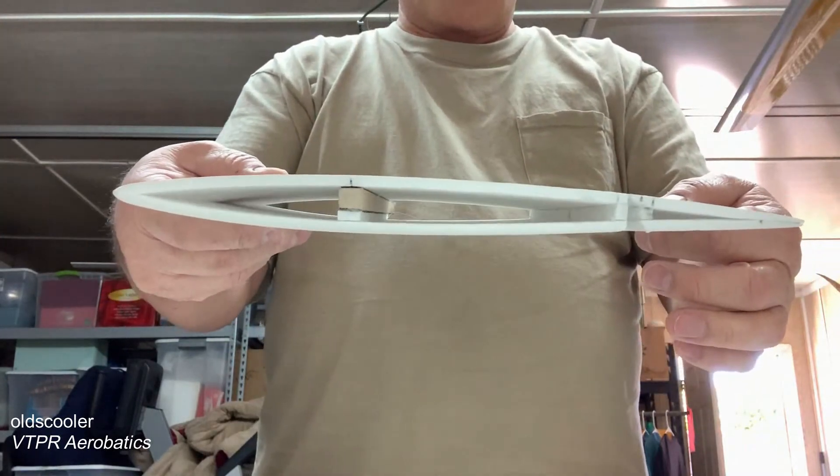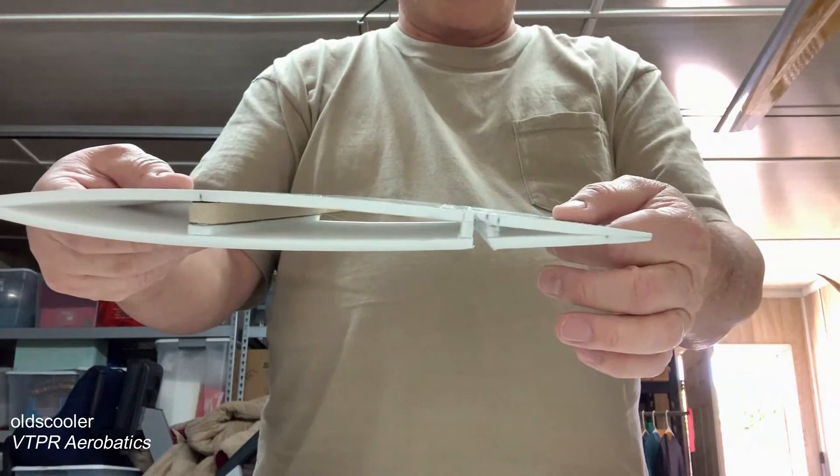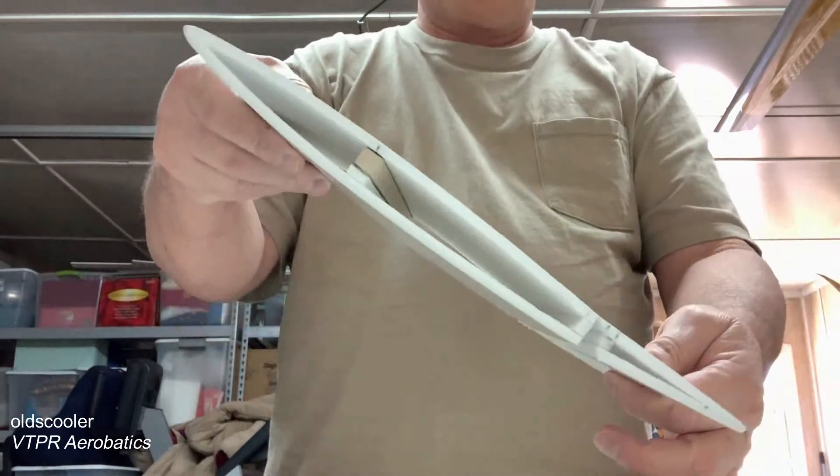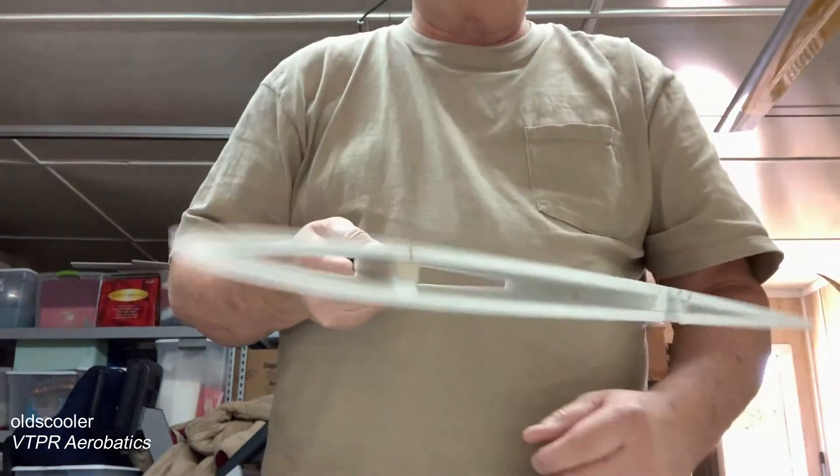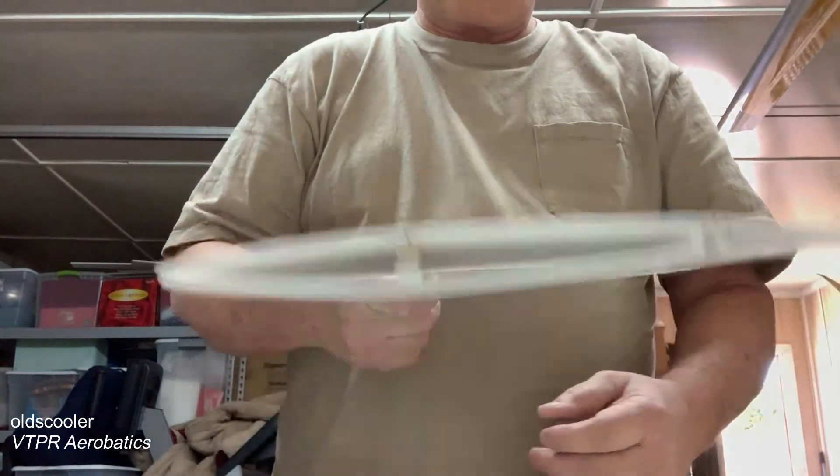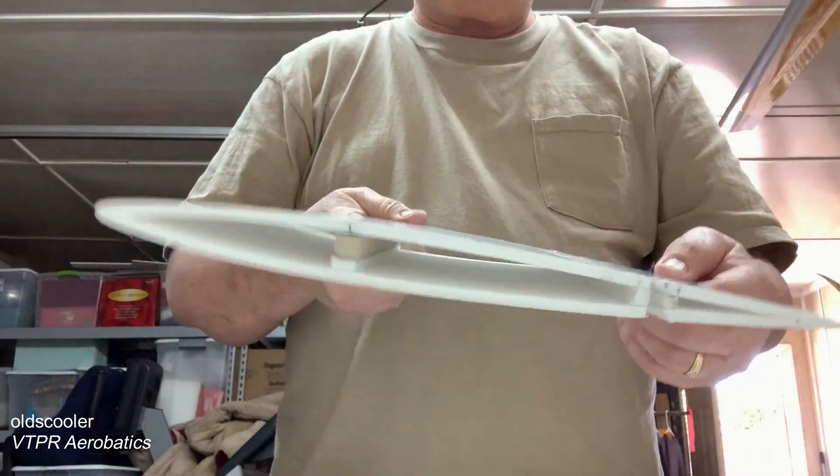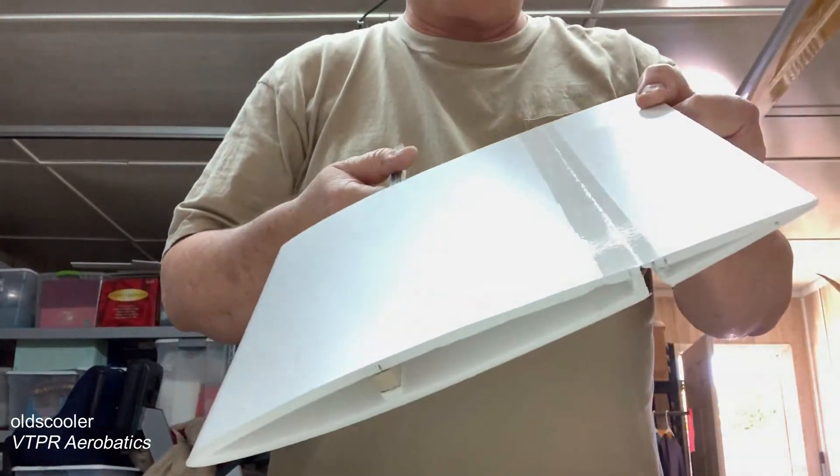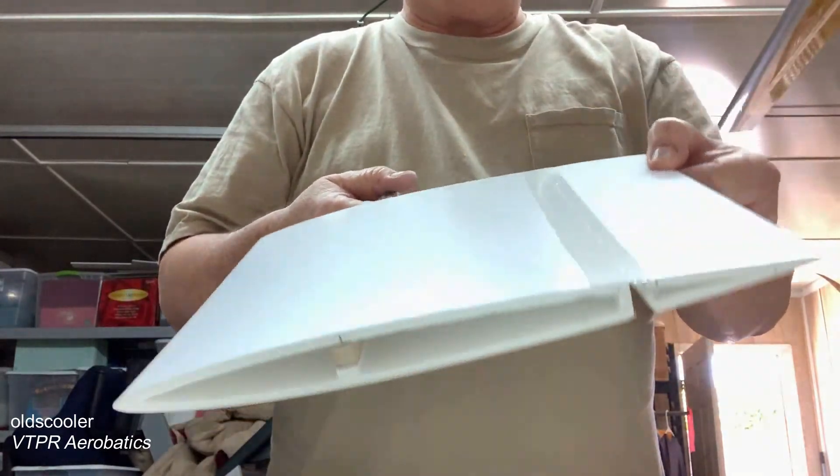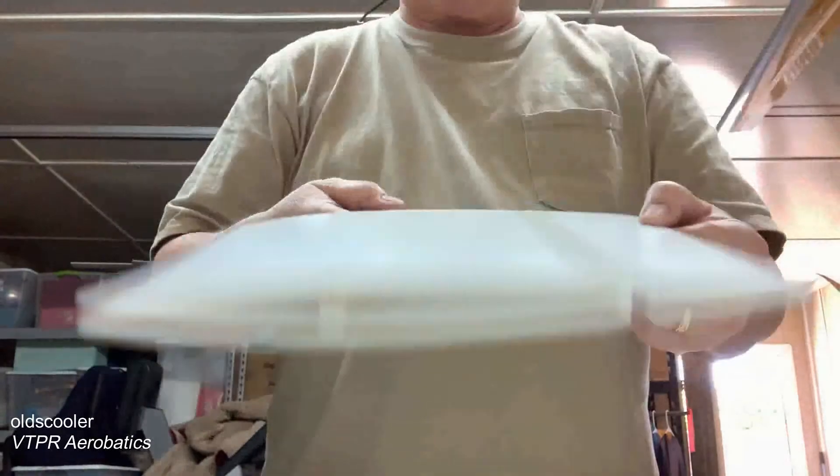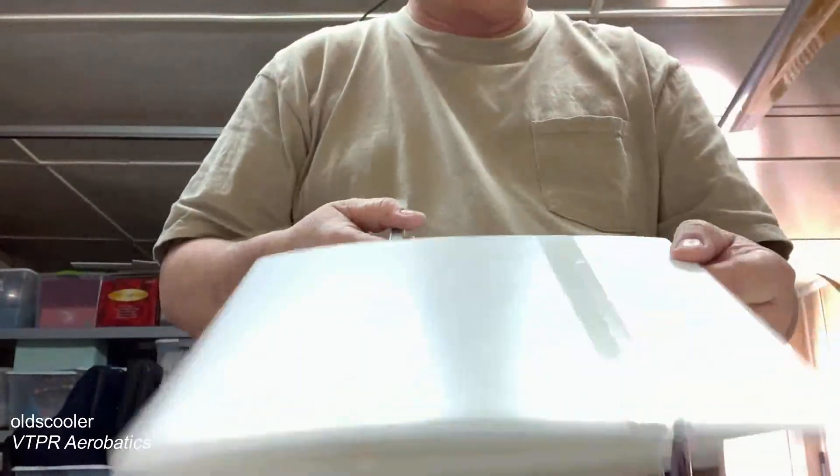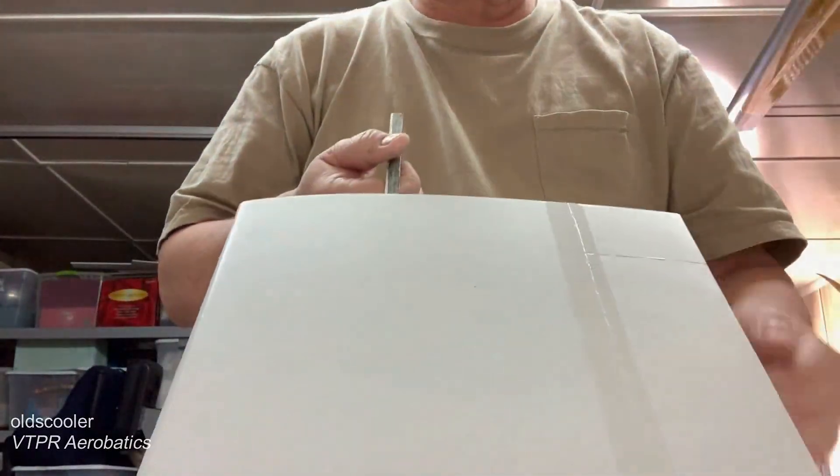So here we have a foam board hollow wing and a hollow aileron. Should do well. That's my little journey and I hope you learn a bit more. It's all fun, it's all about fun and flying these gliders in the park. So anyway, hope you have a good day. See you later. Bye.